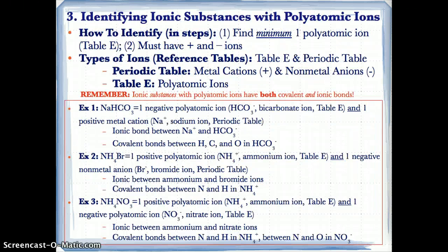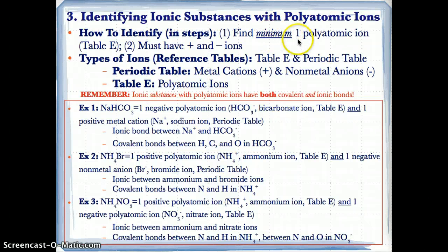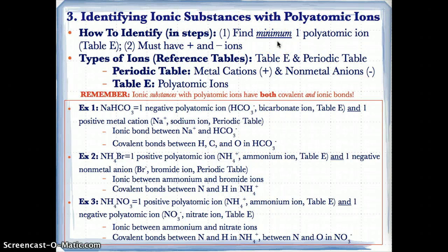Now let's talk about how to identify ionic substances with polyatomic ions. In step 1, you have to find a minimum of at least one polyatomic ion from Table E. You must also have positive and negative ions, because ionic bonds form between positively and negatively charged ions. The types of ions you can look up are on both Table E and the periodic table. The periodic table lists metal cations like Ca2+, K+, Al3+, and nonmetal anions like Cl minus, O2 minus, N3 minus.